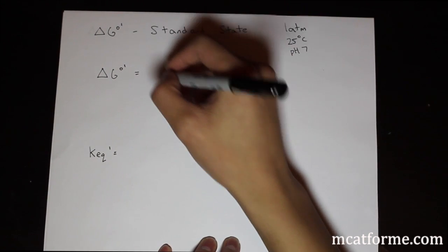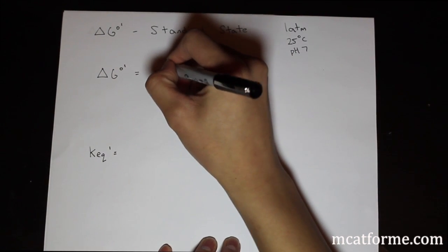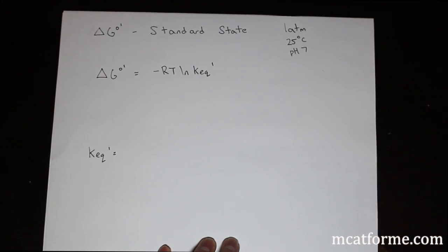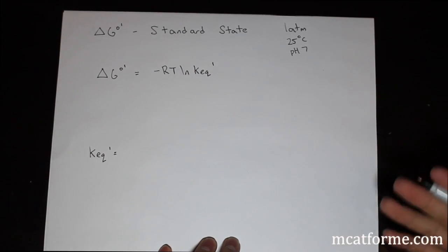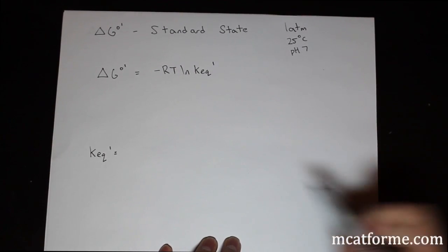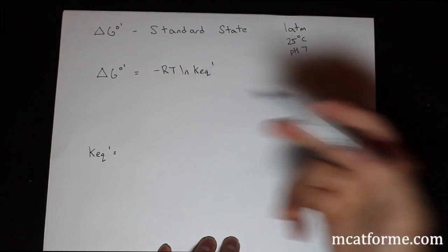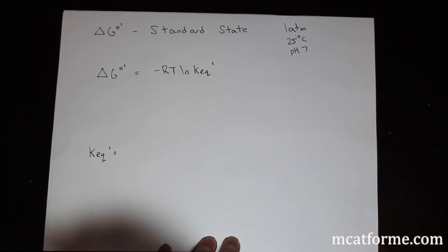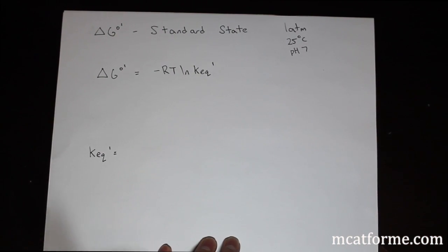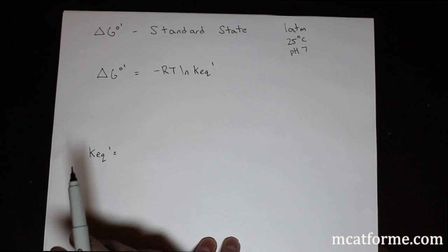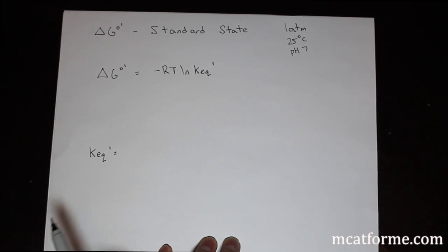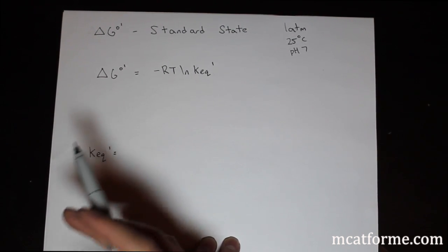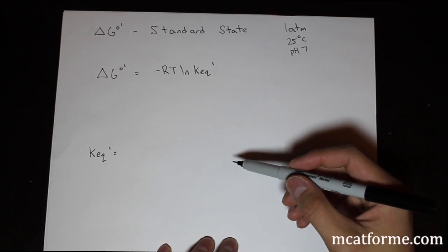The equation for standard Gibbs free energy is: ΔG°' = -RT ln K'eq. R is the gas constant, which they'll give you on the MCAT. T is temperature — always in Kelvins. Just remember that on the MCAT, temperature is almost always going to be in Kelvins.